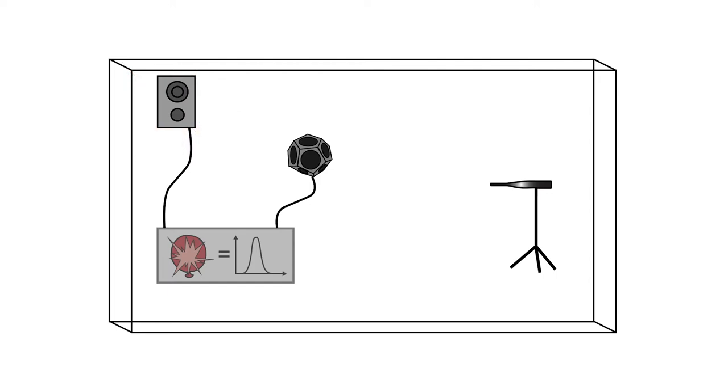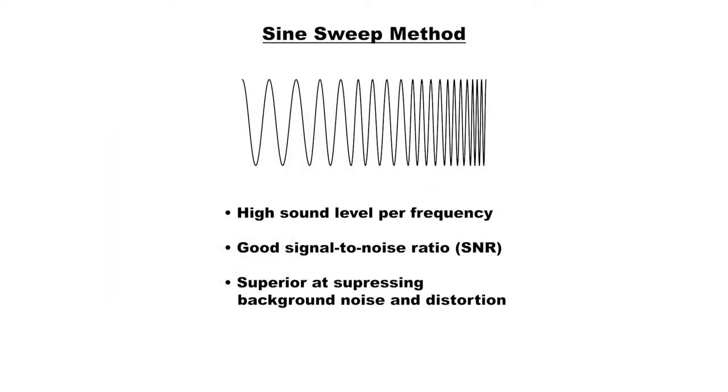An omnidirectional loudspeaker, or omnisource, is a loudspeaker that emits sound almost evenly in all directions. However, it will be difficult, or impossible, to play an impulse with high enough level to measure the room acoustics with decent results. And this leads us to the sine sweep method.